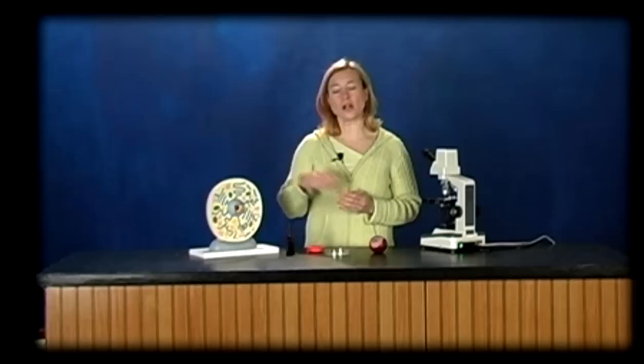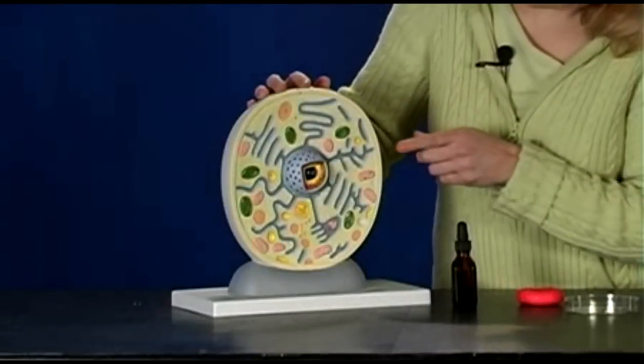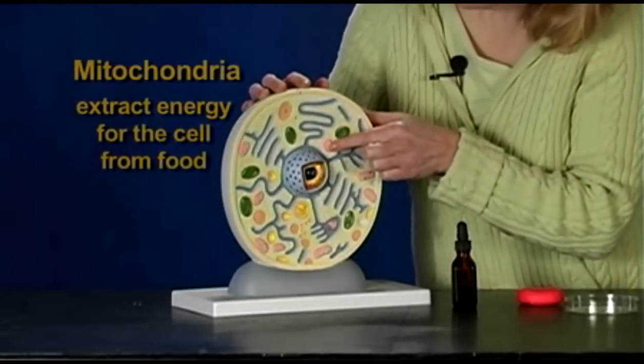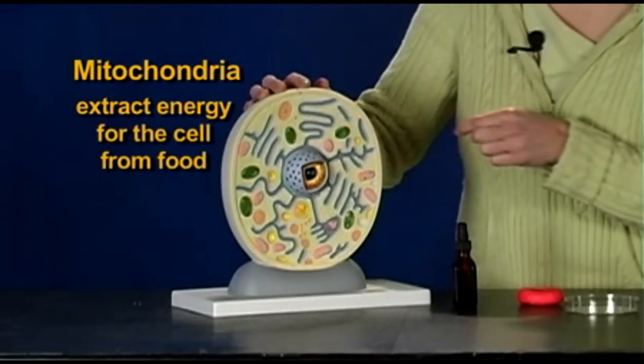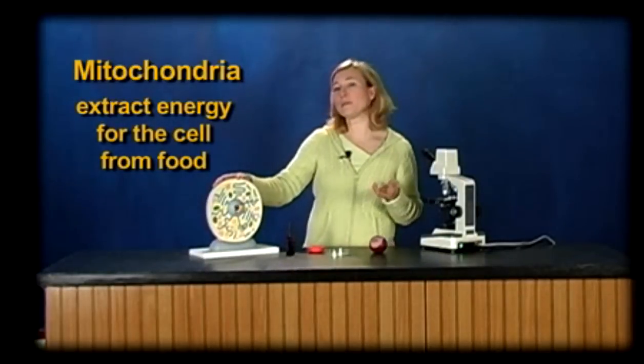Cells live by directly manipulating molecules. Inside every cell are structures that work with different kinds of molecules. These structures are called mitochondria, and they extract energy for the cell from the food.